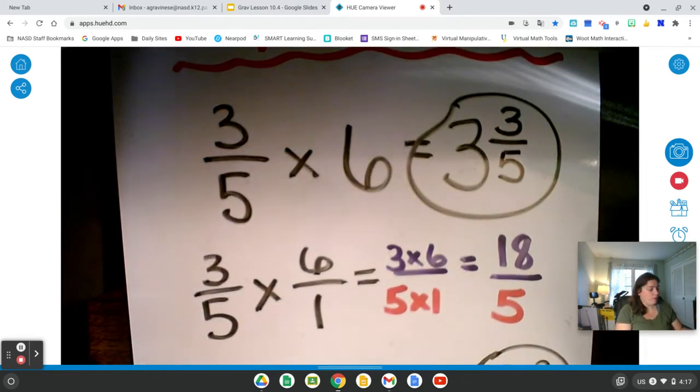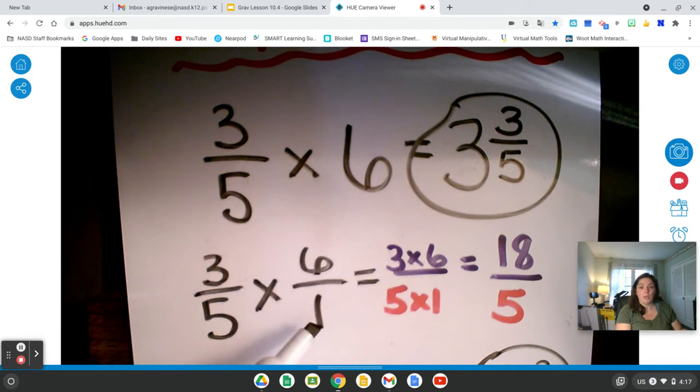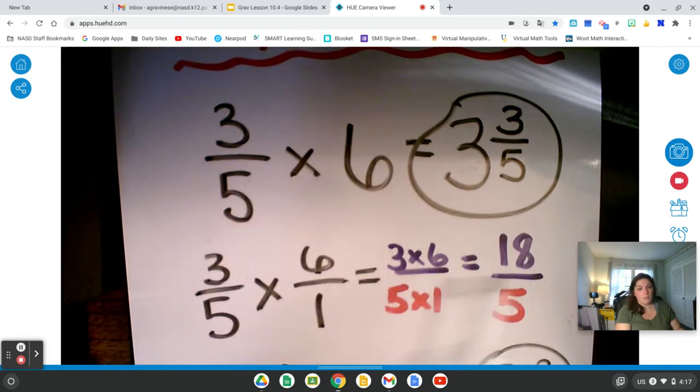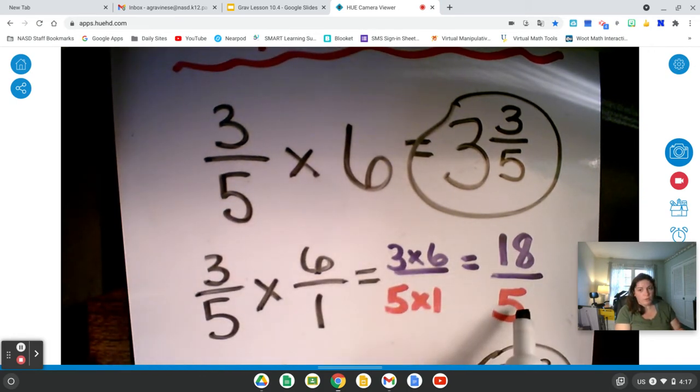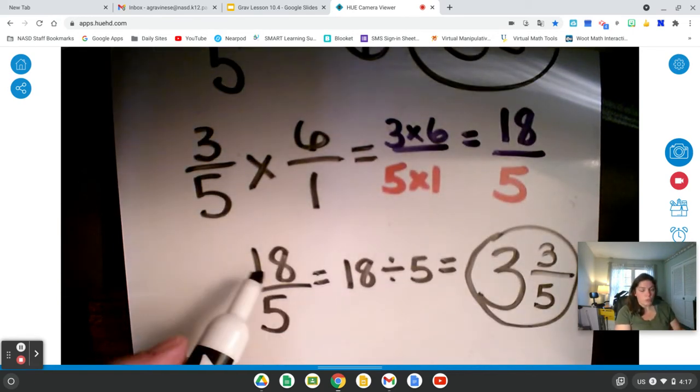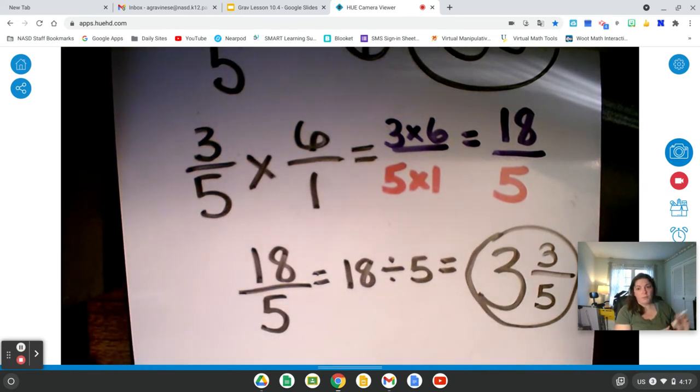Just to recap, first I made my whole number 6 look like a fraction by putting a 1 as the denominator. And then I just multiply across. 3 times 6 equals 18. 5 times 1 equals 5. 18 fifths needs to get turned into a mixed number. 18 fifths is really 18 divided by 5. And I get 3 and 3 fifths.